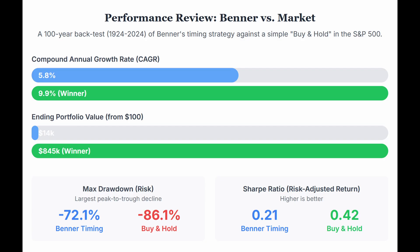For the buy and sell signals, we simulated a portfolio starting in 1924 with simple rules: sell everything on day one of a 'good times' year, hold cash earning zero, then buy back in on day one of a 'hard times' year — strict Benner timing. Compared to buy and hold over the same hundred years, the Benner timing strategy dramatically underperformed. The CAGR was 5.8% for Benner timing versus 9.9% for buy and hold.